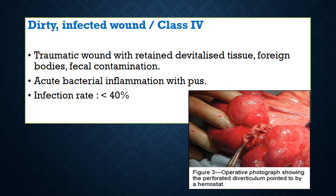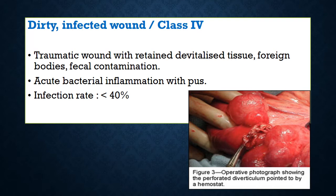Class 4 — dirty infected wounds — are traumatic wounds with retained devitalized tissue, foreign bodies, and fecal contamination. The bacteria can be very virulent, acute bacterial inflammation has already set in, and there is gross pus formation. The infection rate is 25 to 40 percent. Before such wounds are closed, the surgeon will do a thorough lavage of the peritoneal cavity and then the wound itself to mitigate contamination and prevent further infection.